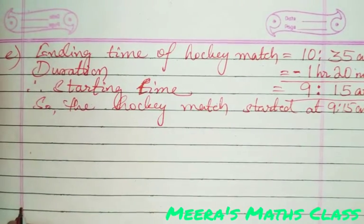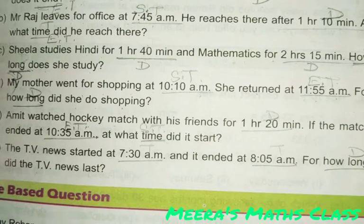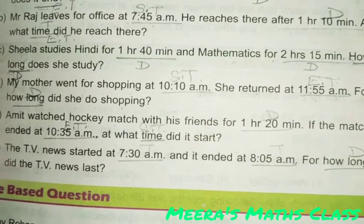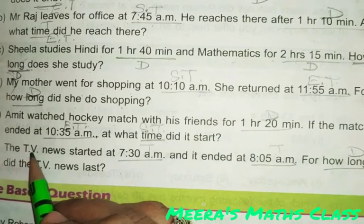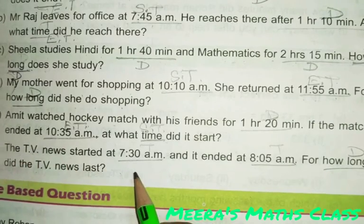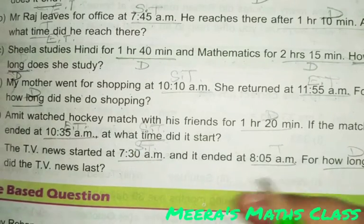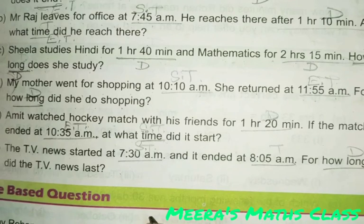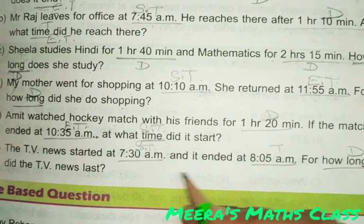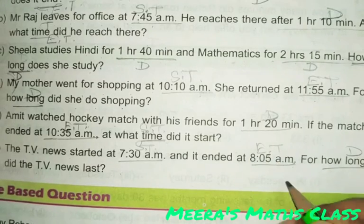Now let's look at the next question. The TV news started at 7:30 AM — that is the starting time. I'm writing these in pencil to make the question more understandable and easy. It ended at 8:05 AM.